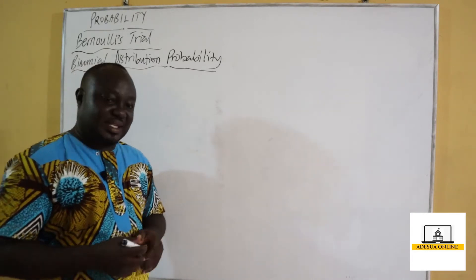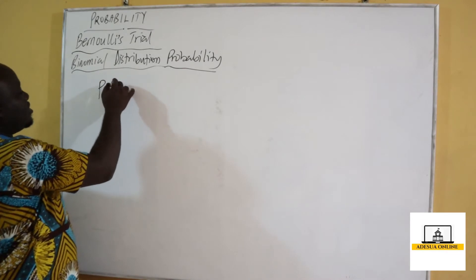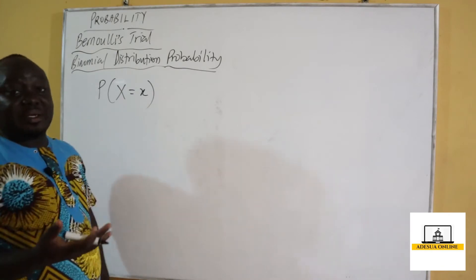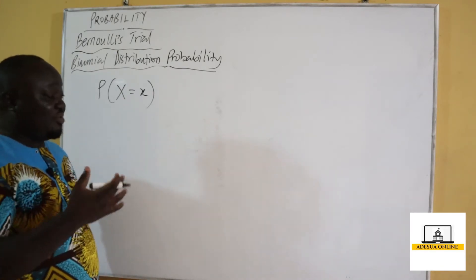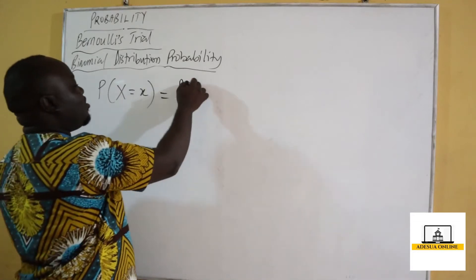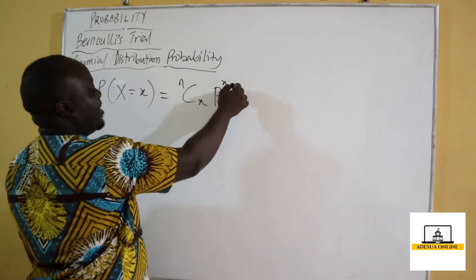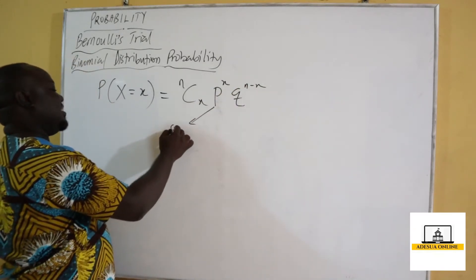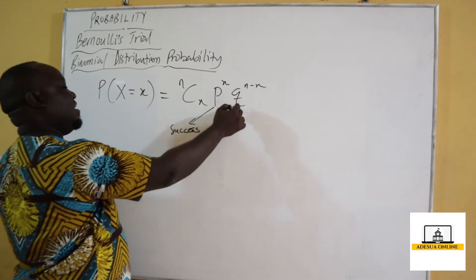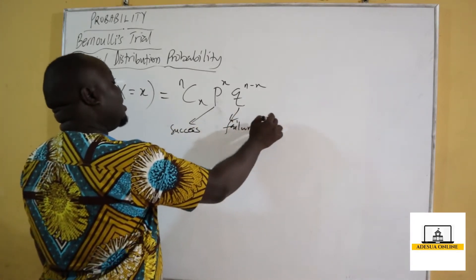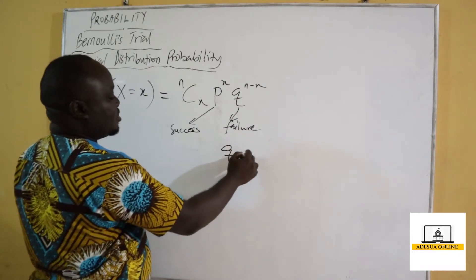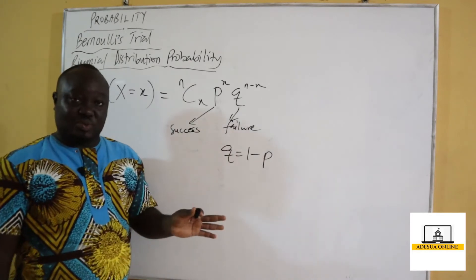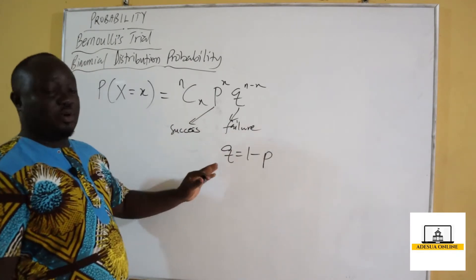The Bernoulli-Strahl formula says that when we want a probability, P(X = x) is equal to n combination x, times p raised to the power x, times q raised to the power n minus x. The p is for success and q is for failure. So q is equal to 1 minus p, because success plus failure is equal to 1.